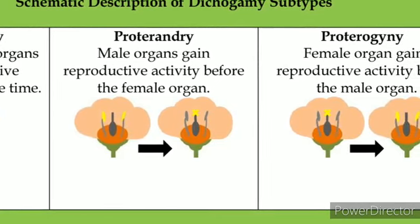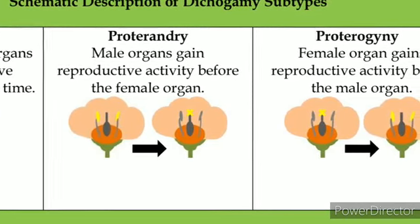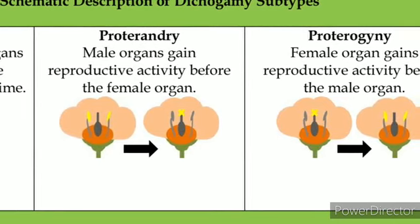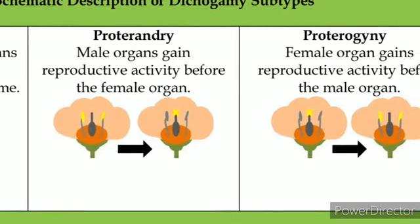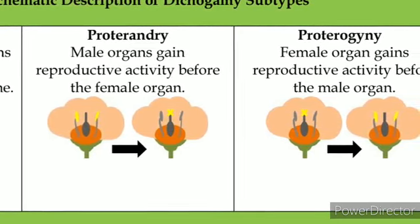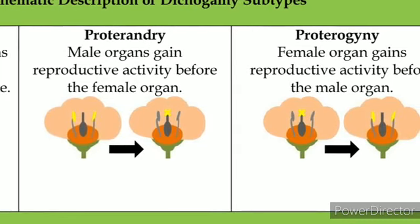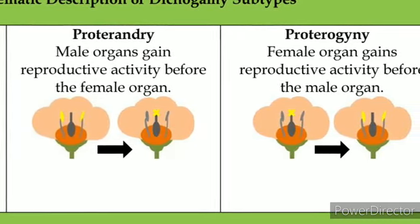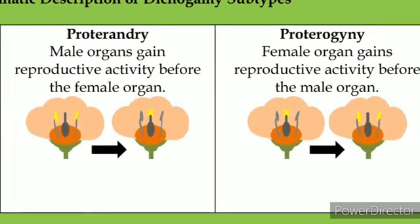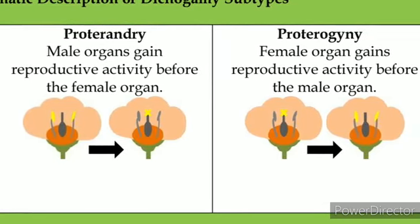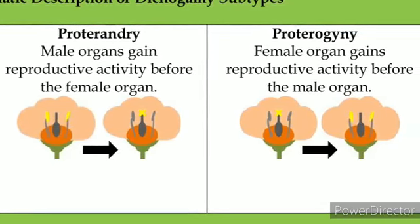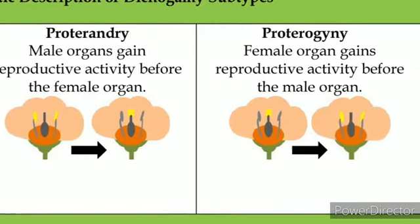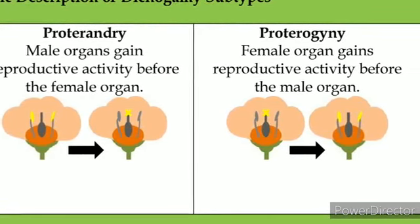The second strategy is herkogamy, where the sex organs are placed at different positions or in different directions. Examples include hibiscus and gloriosa.